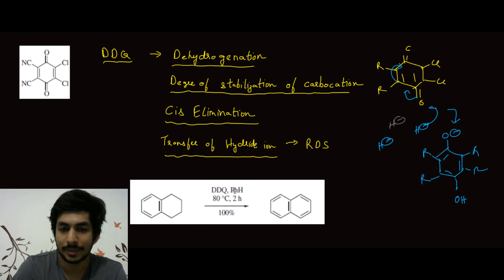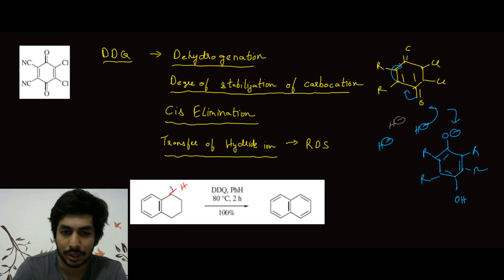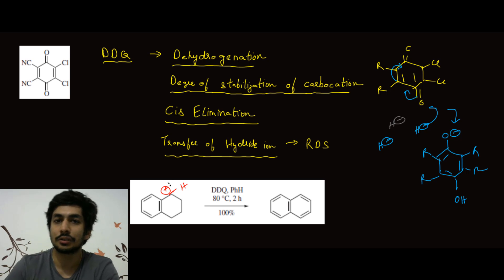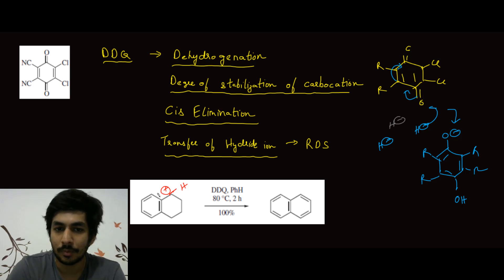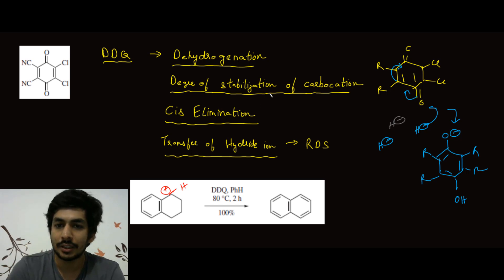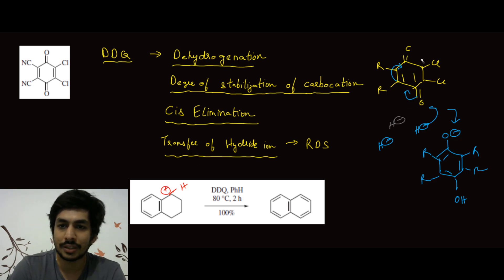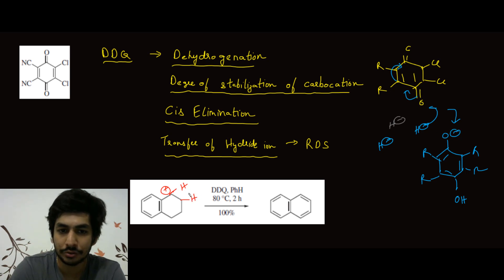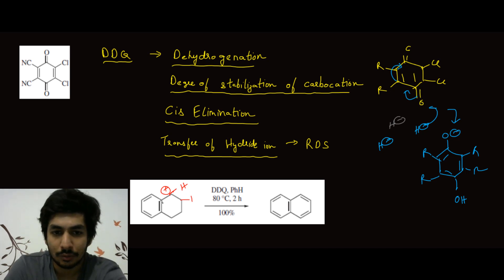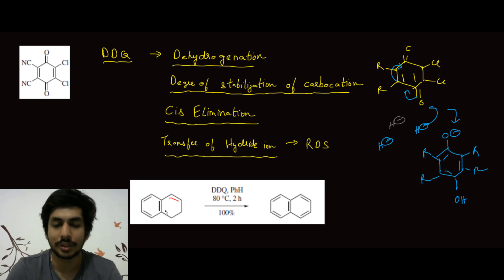Looking at this reaction — the solvent is benzene and we're adding DDQ — what happens is a hydride from one of the hydrogens gets transferred to this oxygen on DDQ. When a hydride is abstracted, a carbocation is generated. You have to do the hydride transfer from the carbon where stabilization of the carbocation is maximum. This is a benzylic carbocation, which is very stable, and that is why the hydride transfer takes place from here. Once hydride transfer occurs and O minus is generated, this O minus extracts the next hydrogen and a double bond is formed.